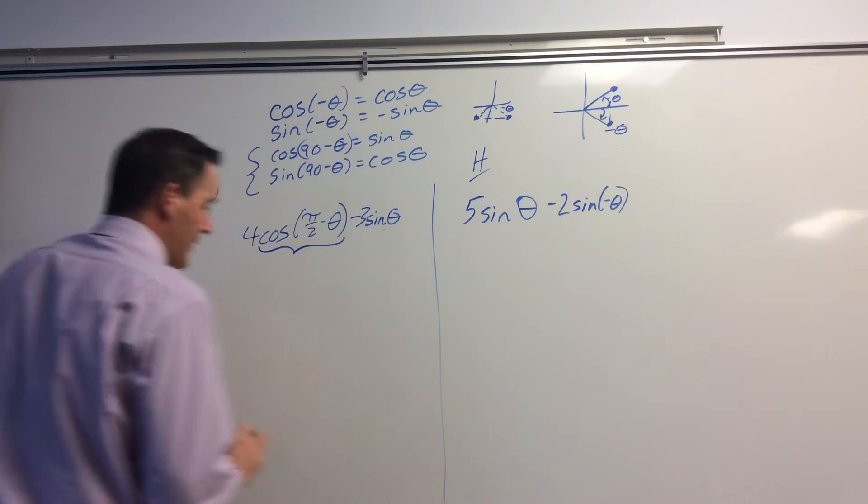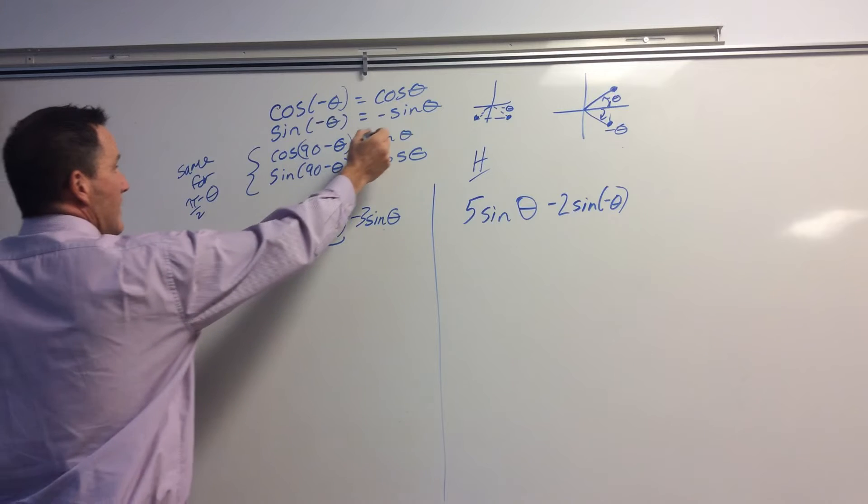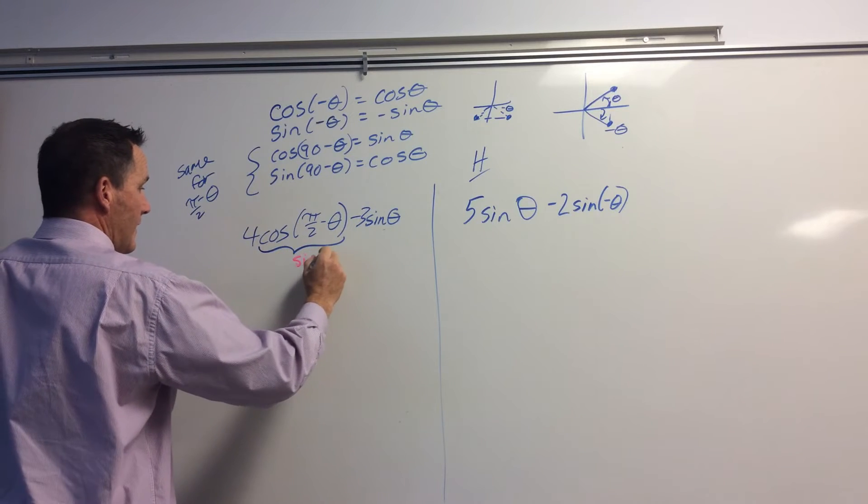And from what I'm looking at, I can tell that cosine pi over 2 minus theta is sine theta. So I replace that with sine theta.